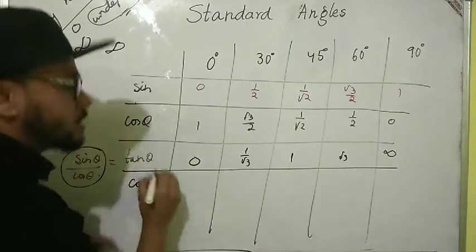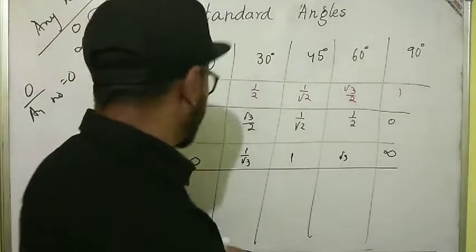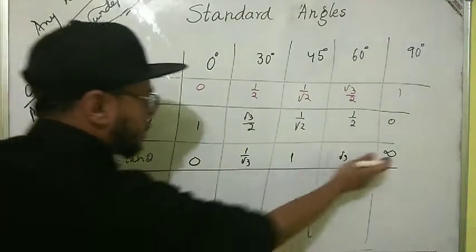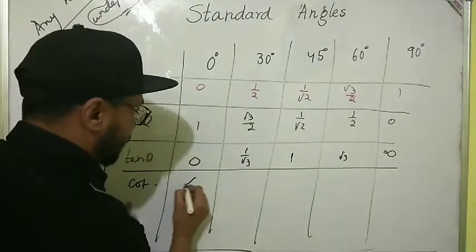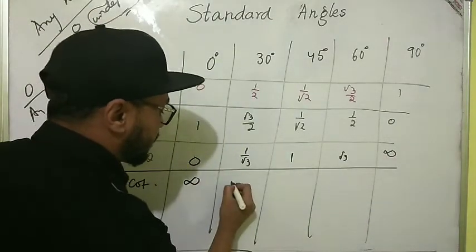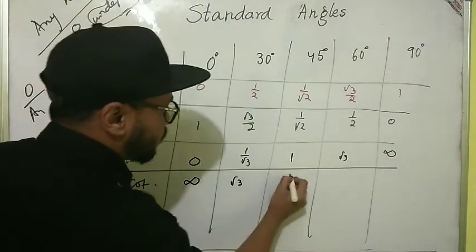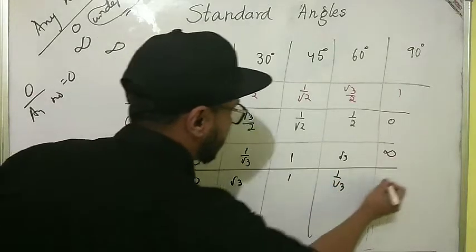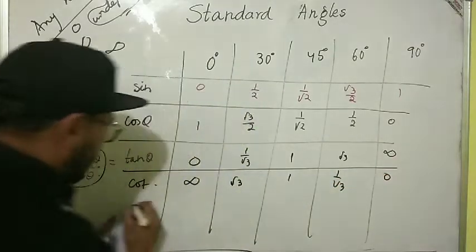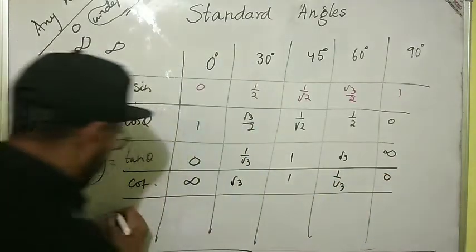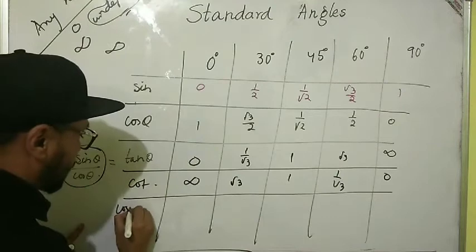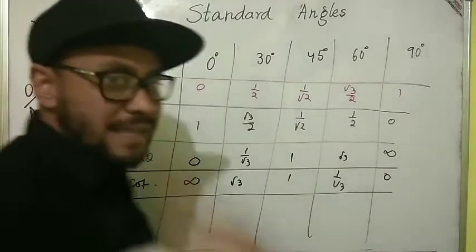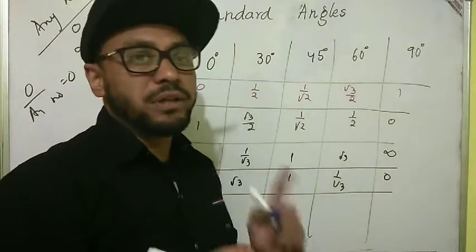For cot, the values are opposite to tan: cot 0° = undefined, cot 30° = √3, cot 45° = 1, cot 60° = 1/√3, cot 90° = 0.